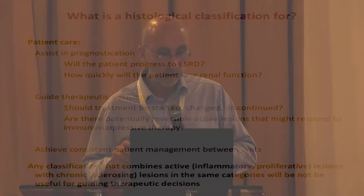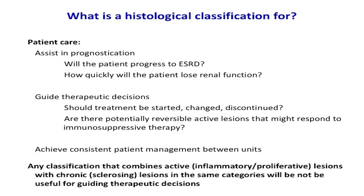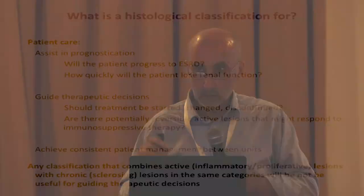Classification is also important in the care of your patients, assisting in prognostication and guiding therapeutic decisions, and achieving consistent patient management between units. There are many very detailed and complex classifications where the classes are defined by both active and chronic lesions — for example, cellular and fibrous crescents in the same class. Those classifications are, in general, going to be useless for guiding therapy, because they incorporate irreversible chronic damage and active, potentially treatable lesions in the same classes.